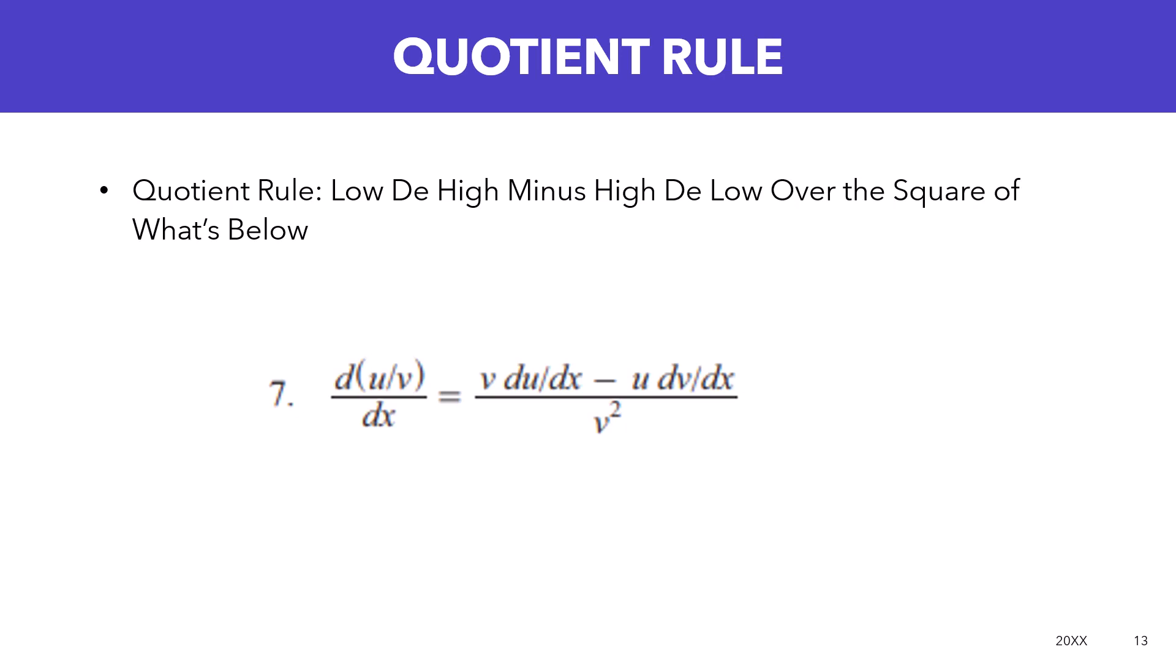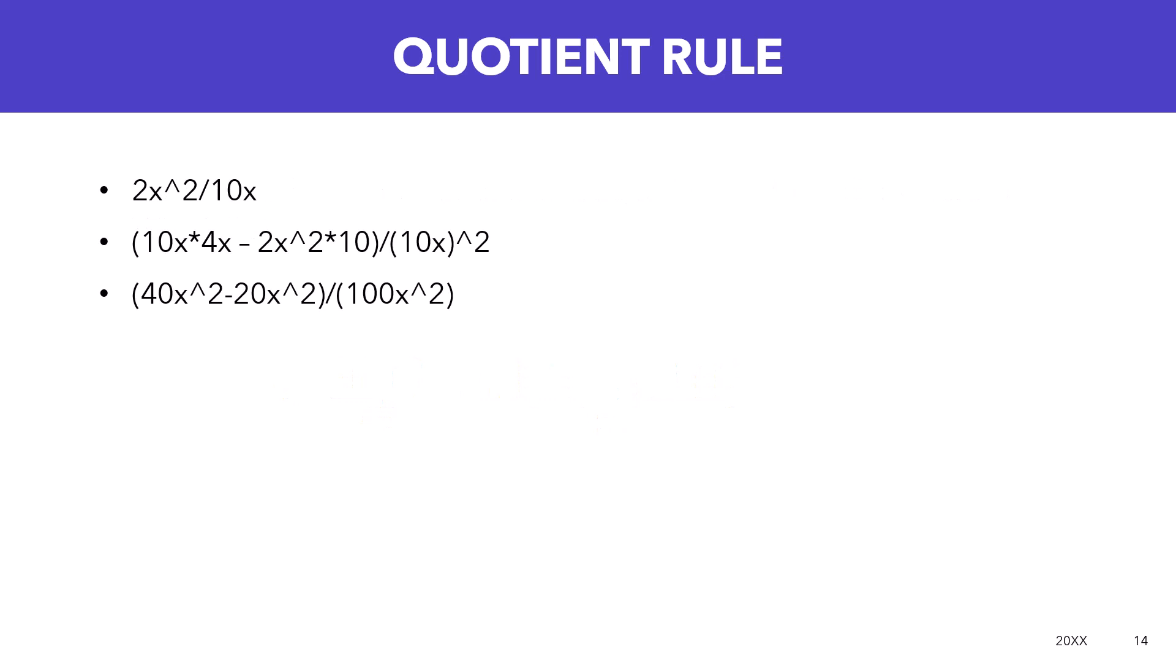So low, you're going to take the low term, multiply it by the derivative of the high term, then subtract that by the high term times the derivative of the low term, then put that all over the square of the term that was on the bottom. For this problem, 2x squared divided by 10x.